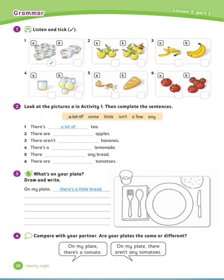Listen 3, part 2. Exercise number 1: Listen and tick. Listen carefully and tick the correct answer. Number 1 is done for you: There is a lot of tea — Picture A. Number 2: There are few apples. Number 3: There aren't any bananas.